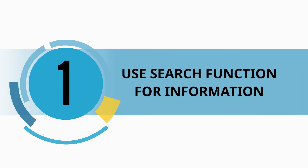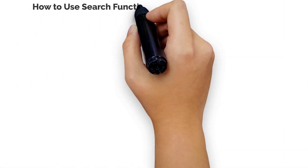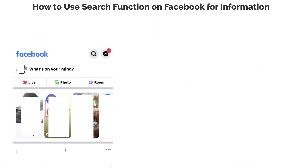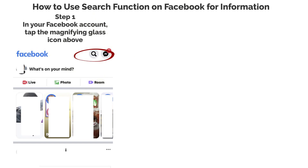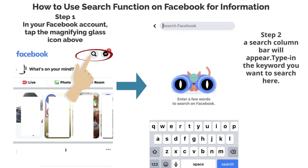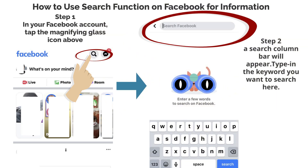Use the search function for information. Step 1: In your Facebook account, tap the magnifying glass icon above. Step 2: A search column bar will appear. Type in the keyword you want to search here.